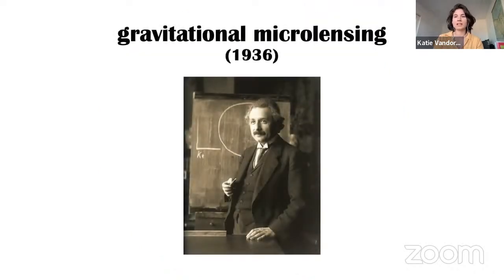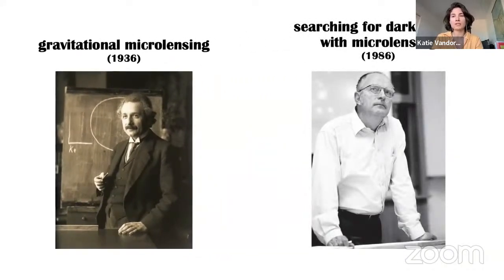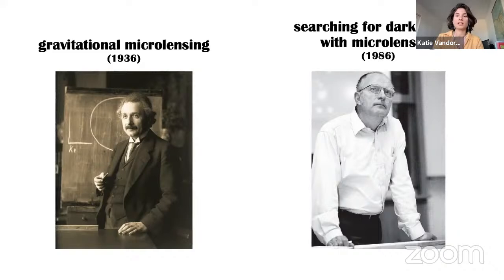I can't begin an introduction on microlensing without mentioning Einstein. Most people know the story where he eventually published his theory — what he called a little calculation — after being asked to by a colleague. In his paper, he mentions that there's no hope of observing this phenomenon. Of course, astronomers persisted, and soon there was progress made. But it wasn't until Paczynski that microlensing really took off back in the 1980s, with the search of MACHOs in the galactic halo.